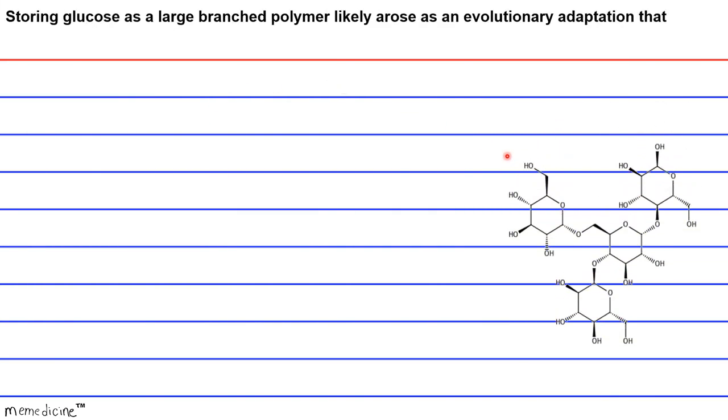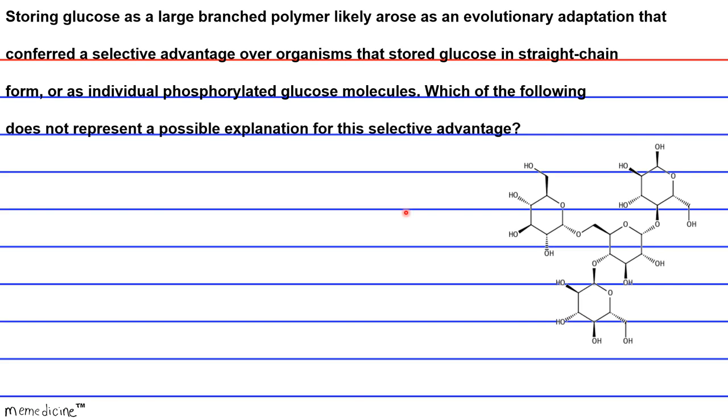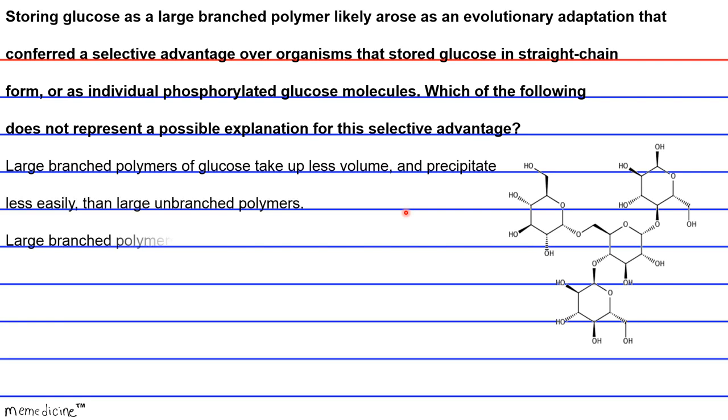Storing glucose as a large branch polymer likely arose as an evolutionary adaptation that conferred a selective advantage over organisms that stored glucose in straight chain form or as individual phosphorylated glucose molecules. Which of the following does not represent a possible explanation for this selective advantage? Is it A, large branch polymers of glucose take up less volume and precipitate less easily than large unbranched polymers? B, large branch polymers of glucose are able to form chylomicrons more easily, resulting in increased ease of transport in the blood?